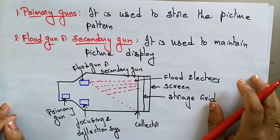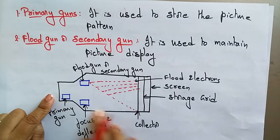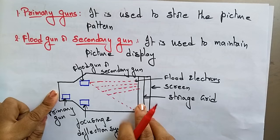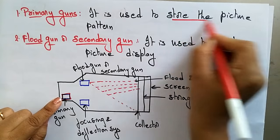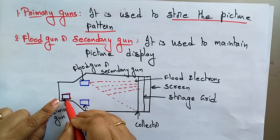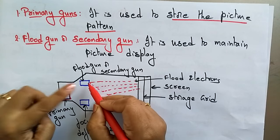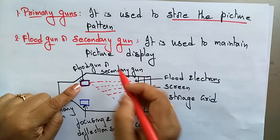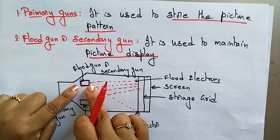The primary gun is used to store the picture pattern. As you can see in this picture of the DVST, the primary gun stores the picture pattern. The flood gun or secondary gun is used to maintain the picture display. So the primary gun stores the picture pattern and the secondary gun maintains the picture display.